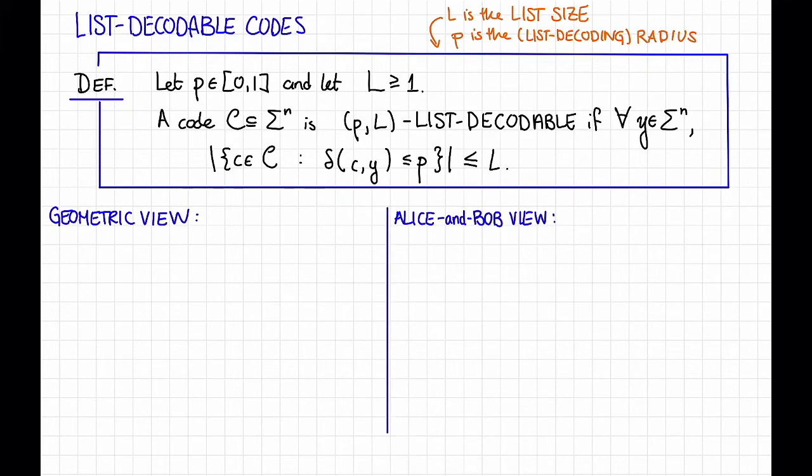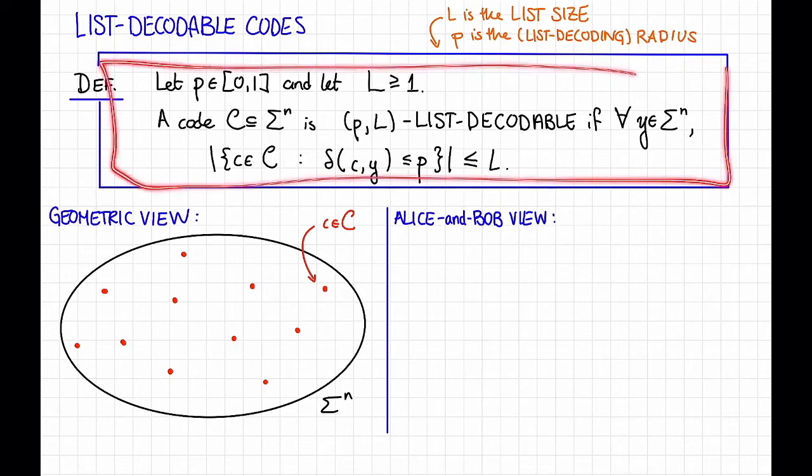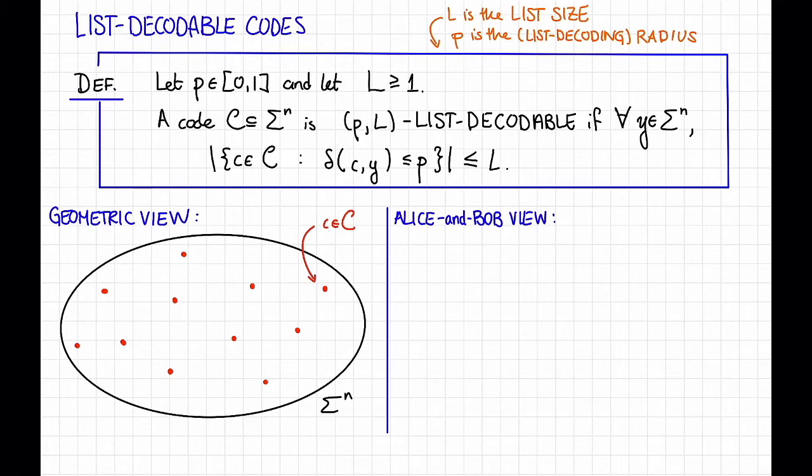The geometric view looks something like this. Suppose that this is our set sigma to the n, and here's our code C. It's a bunch of code words in sigma to the n. Then this definition says that C is list decodable, or P, L list decodable, if for any point Y, let's say that one in sigma to the n, if we look at the ball, the hamming ball of radius P times n around Y, say it looks like that, then the number of code words in that ball is no more than L, and this should happen no matter what center Y we choose.